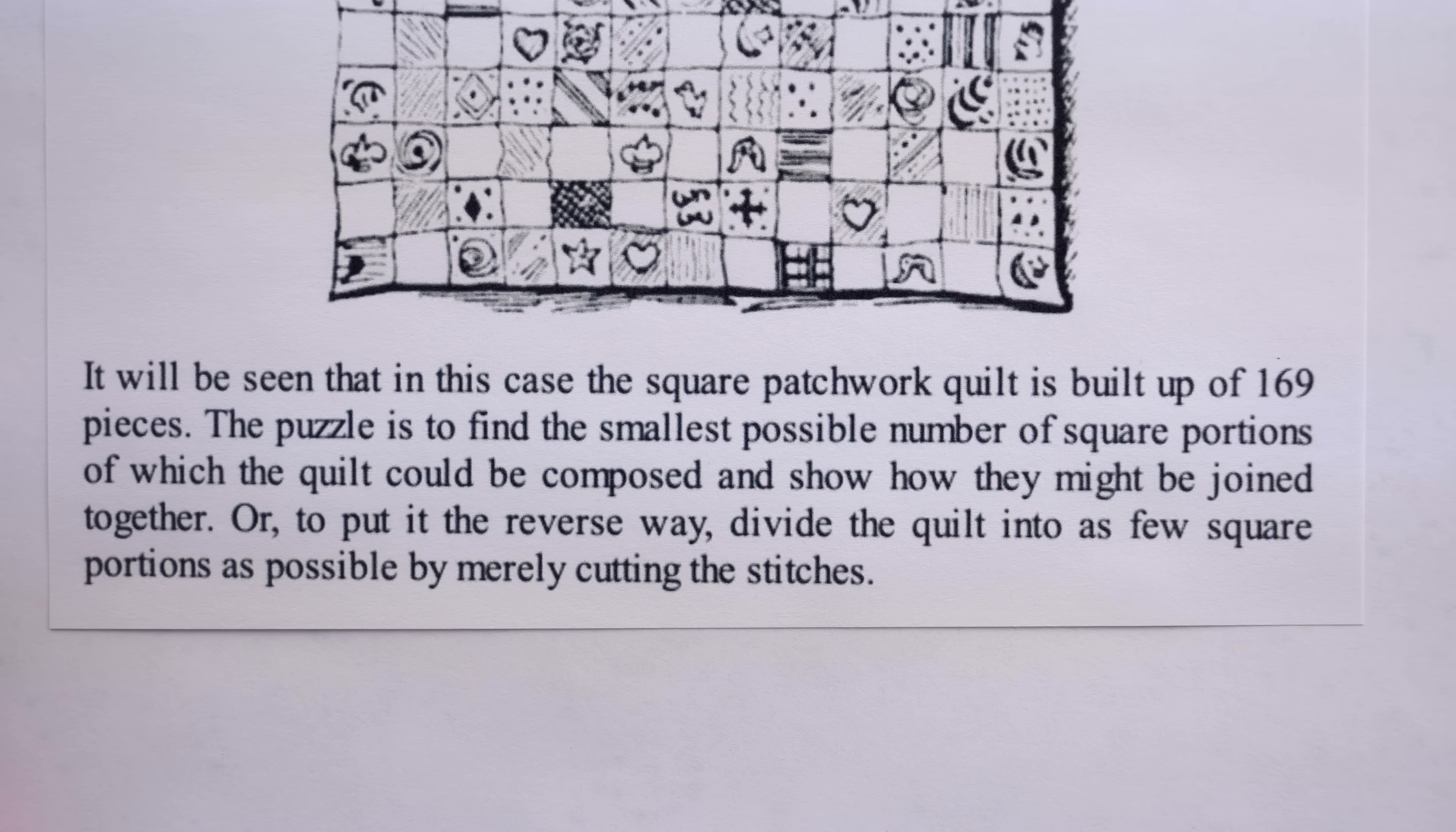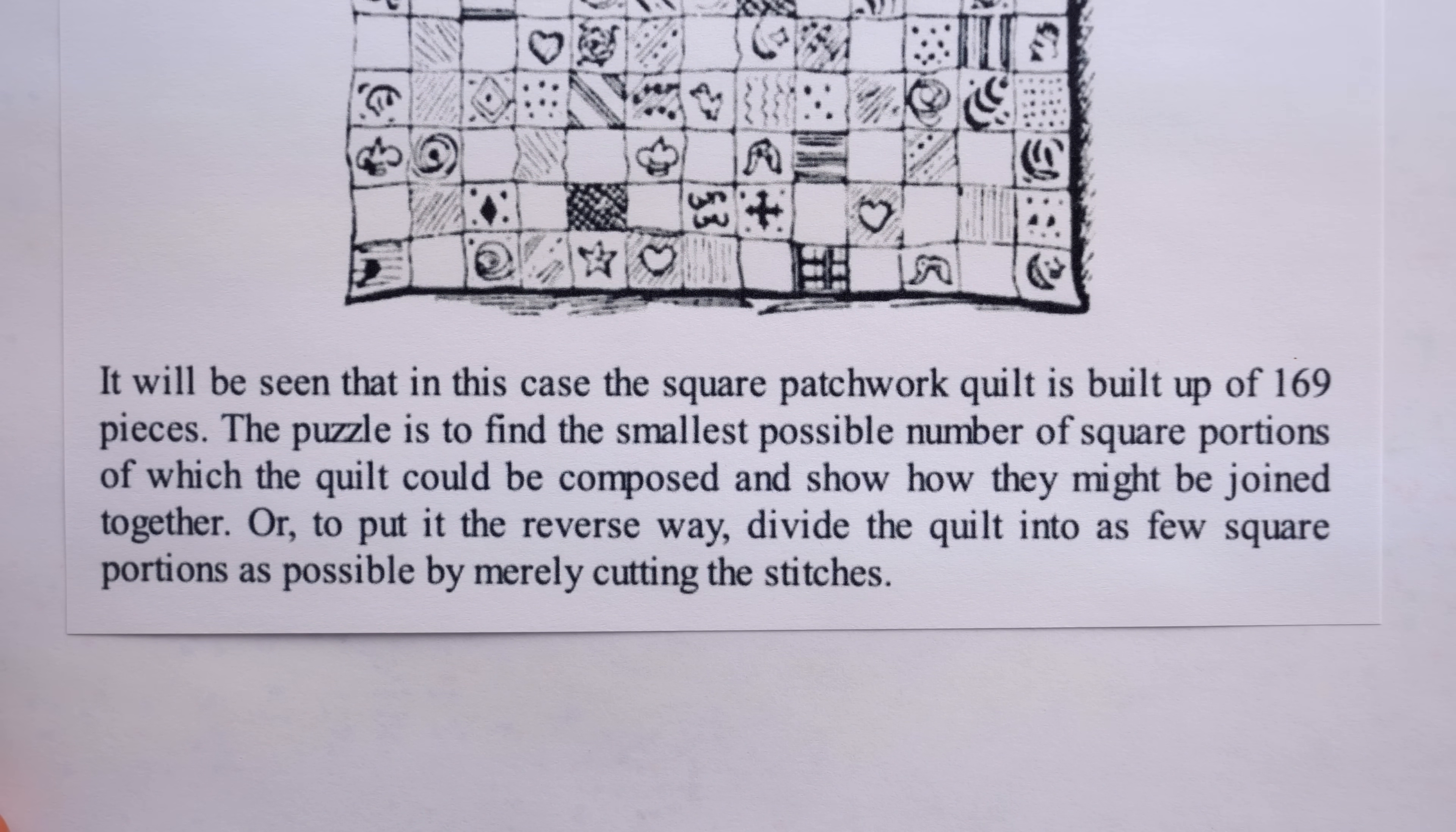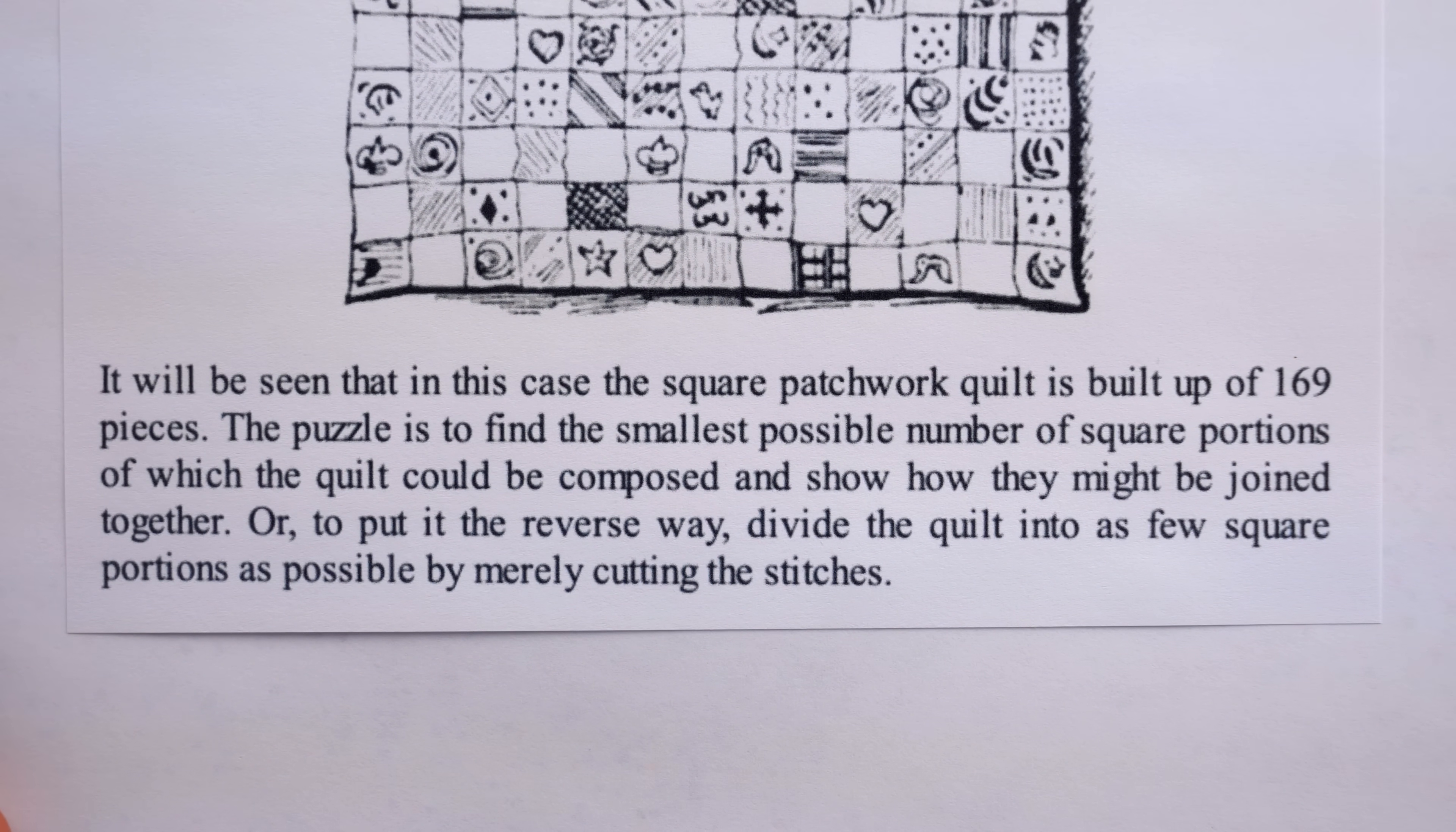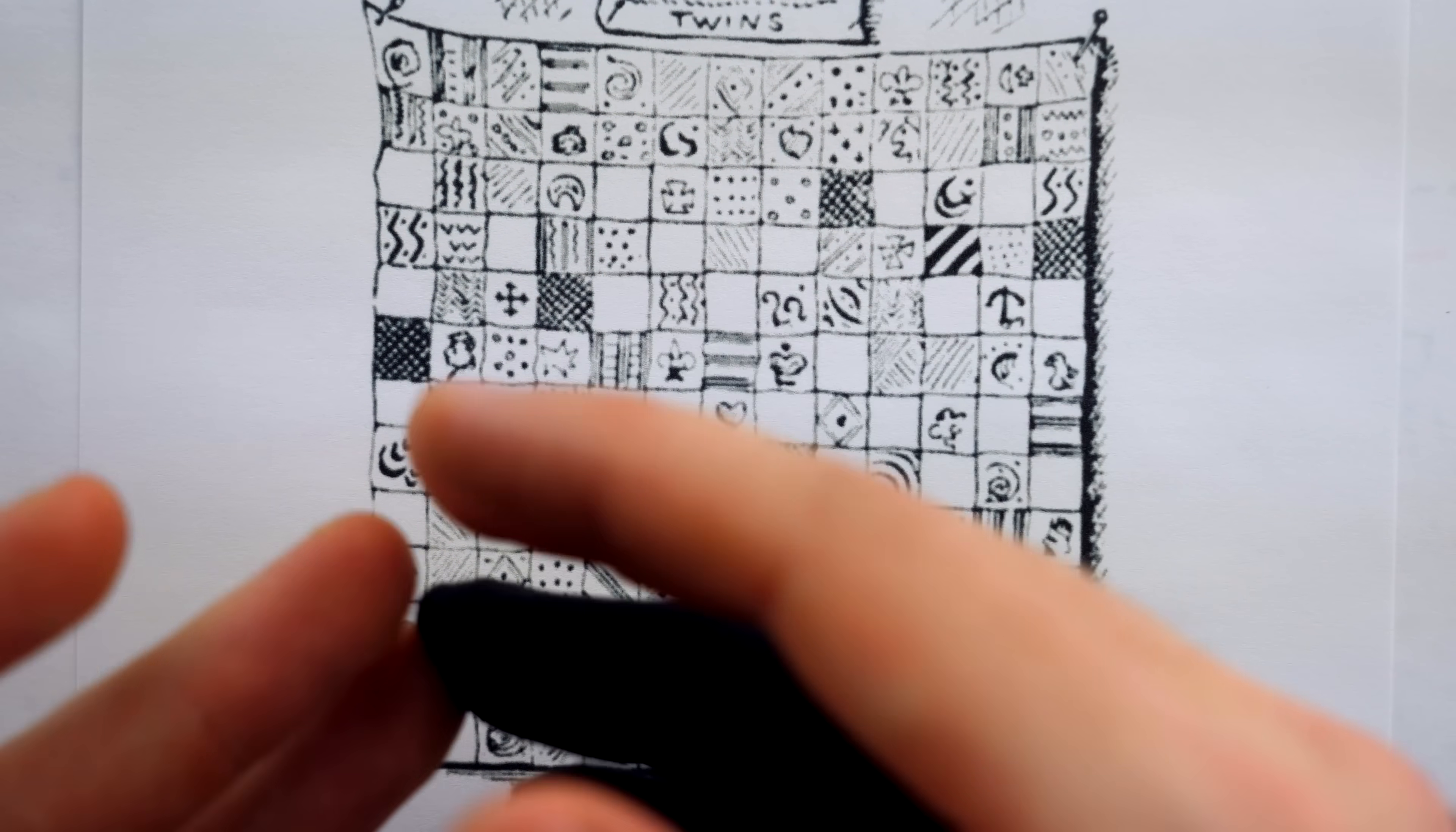It will be seen that in this case, the square patchwork quilt is built up of 169 pieces. The puzzle is to find the smallest possible number of square portions of which the quilt could be composed and show how they might be joined together. Or to put it the reverse way, divide the quilt into as few square portions as possible by merely cutting the stitches. So again, we're cutting along the seams. You can't cut a patch into fragments.